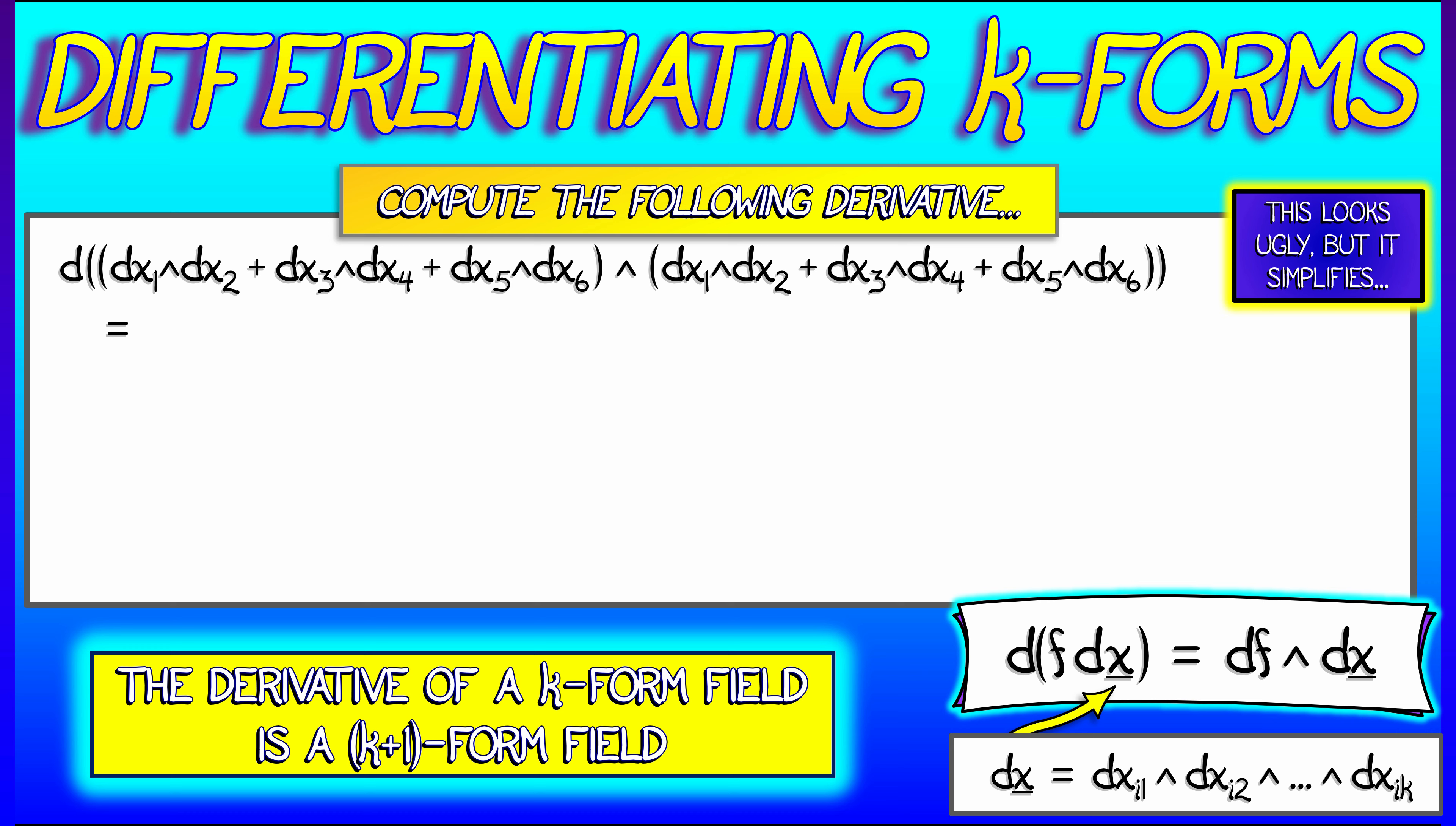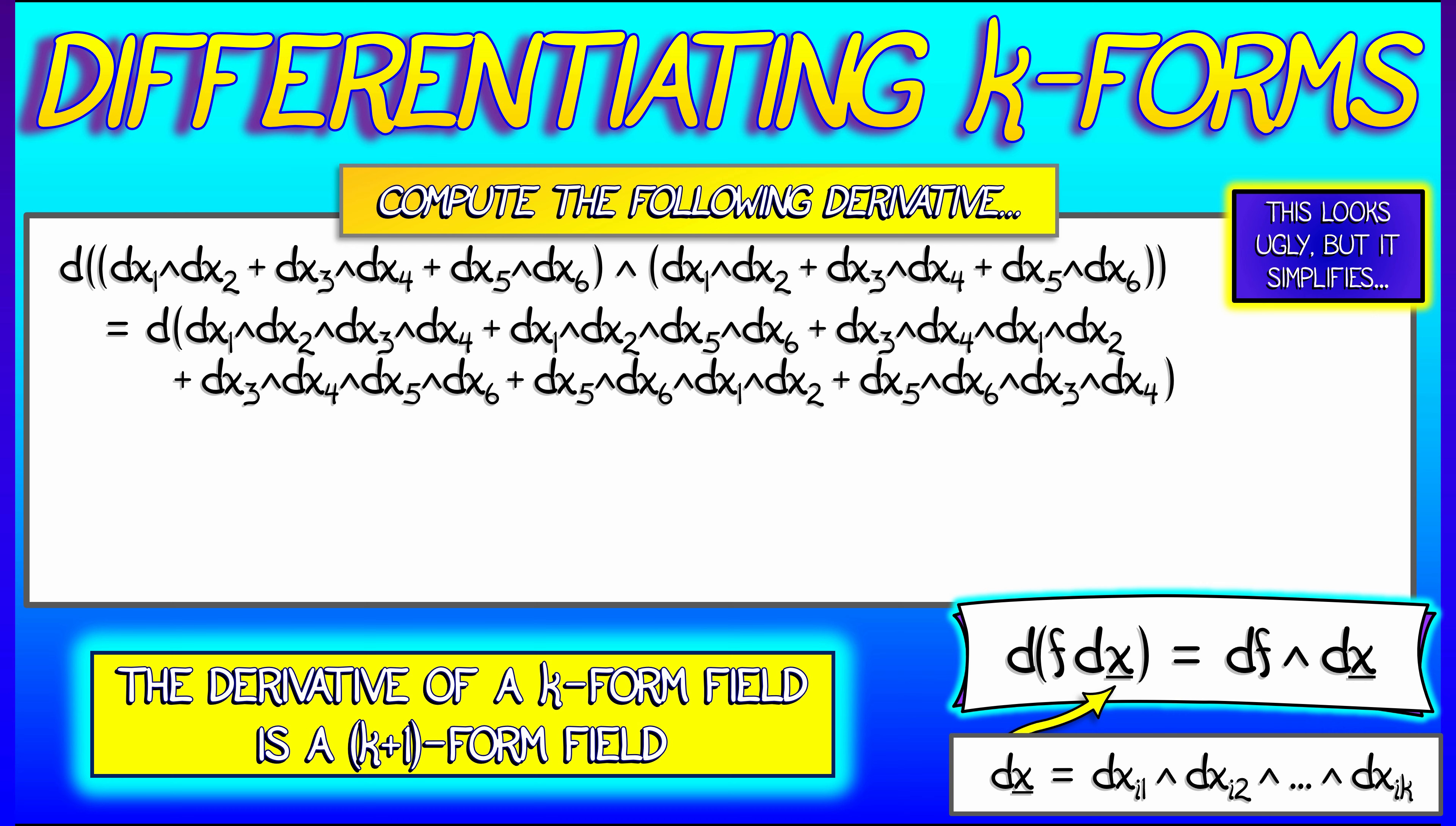Now that looks pretty bad. But if you take the wedge product of that two-form with itself, get rid of the repeats, you are at first left with six terms, six basis two-forms. Now this is going to require a little bit of manipulation and algebra on your part.